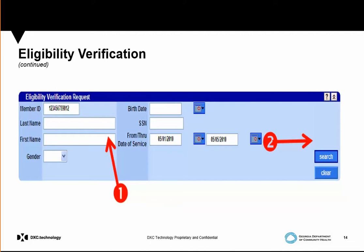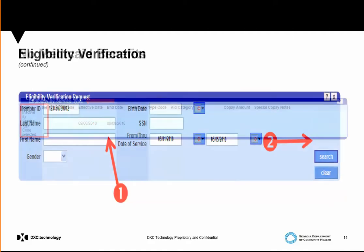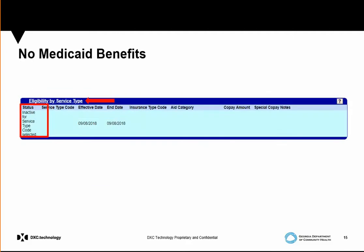If you're not certain or if there's a number mix-up in the member ID, you can search eligibility using the last name, first name, date of birth, and Social Security number for that member along with the date of service, then hit Search. Here we show a screenshot of a member that does not have any eligibility benefits — under Eligibility by Service Type on the far left, the status shows Inactive for service type code selected, which means this member does not have eligibility for September 8th, 2018.